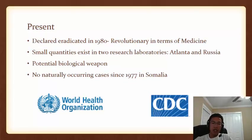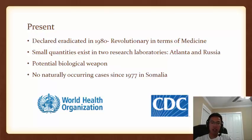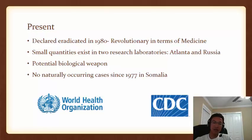Presently there is no threat of naturally occurring smallpox. It was declared eradicated in 1980, which was revolutionary for medicine. It does exist in small quantities in two research laboratories — one in Atlanta, Georgia, and one in Russia — both supervised by the World Health Organization and the CDC. The only threat smallpox would pose today is as a potential biological weapon. The last naturally occurring case was in 1977 in Somalia.